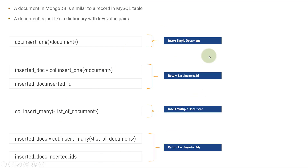So we used the insert_one method to insert a single document and the insert_many method to insert multiple documents. This was all about how we can insert documents inside MongoDB. Hope you liked this video — please subscribe to the channel and share these videos with other people. Thank you.